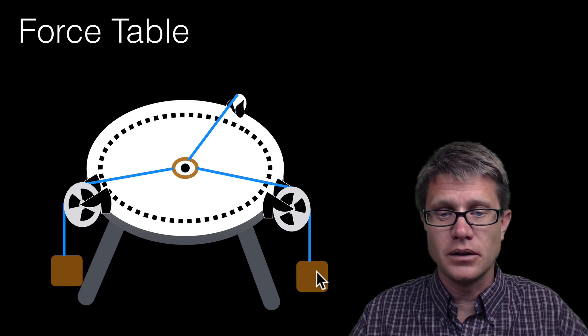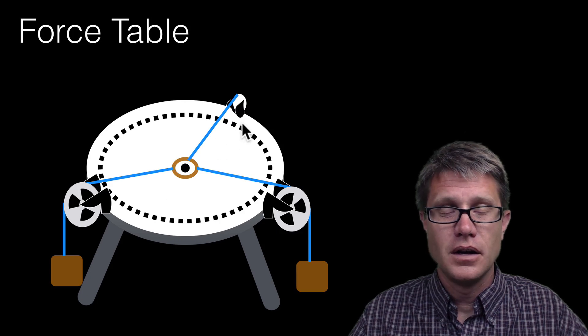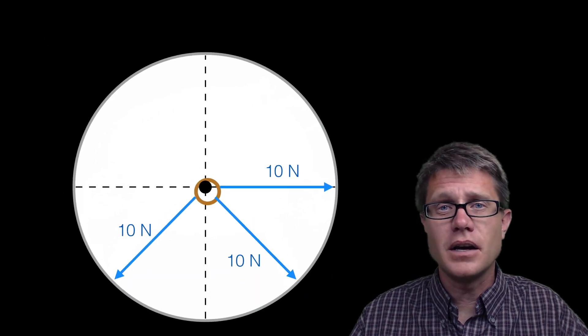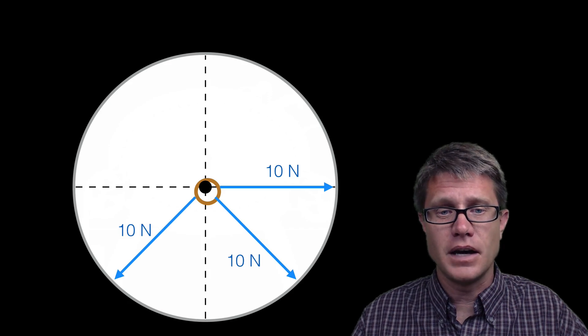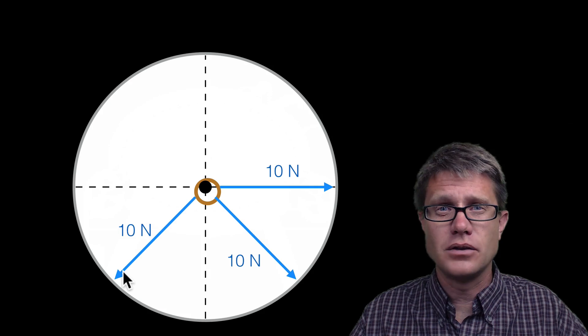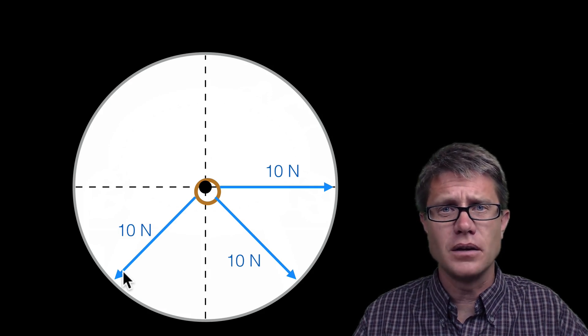And so let us say we put a 1 kilogram mass here, here and here. What do we have? 10 Newton force at each of those levels. And so let us say I give you a problem like this in the physics lab. We have a 10 Newton force acting to the right, down and to the right and down and to the left. Could you figure out what the vector sum is? In other words what is the sum of all of those?